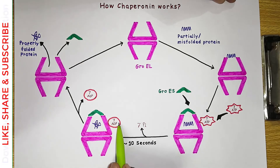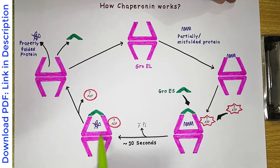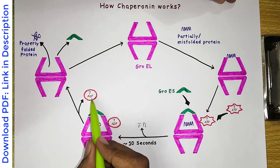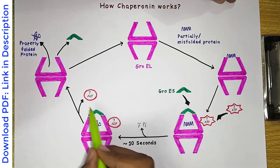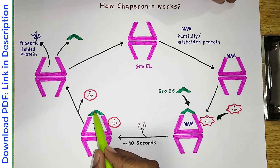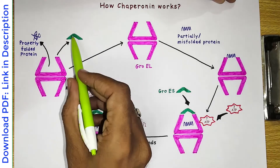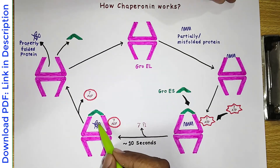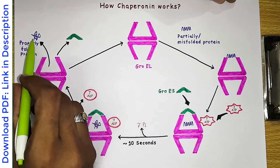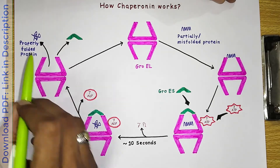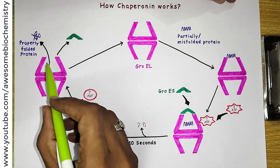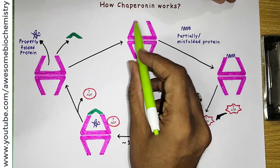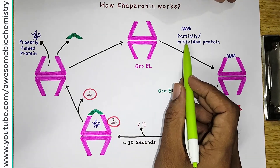ADP molecules have no affinity for the chamber, so all seven ADPs dissociate from GroEL. Once the ADPs dissociate, GroES also dissociates. Once GroES dissociates, the chamber opens and the properly folded protein leaves the cavity. Everything dissociates, and GroEL is now ready to undergo a second cycle of protein folding.